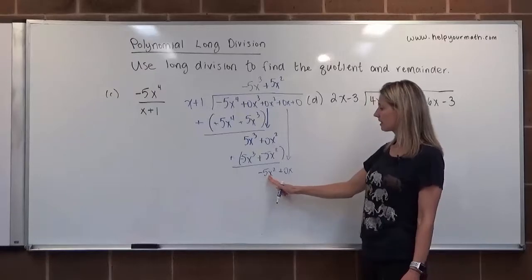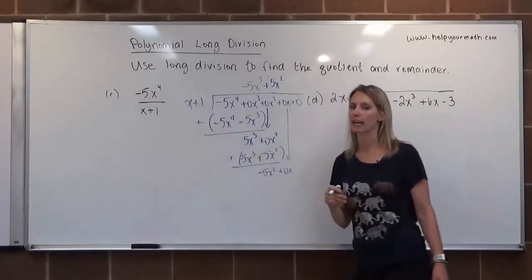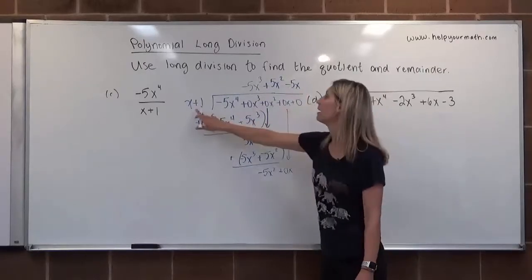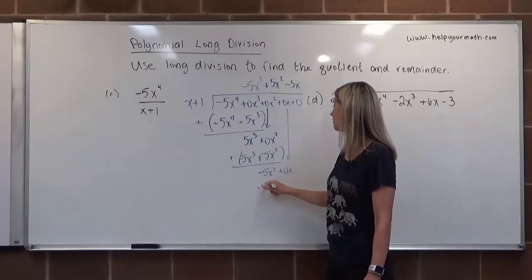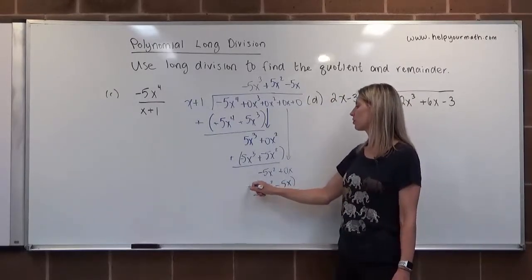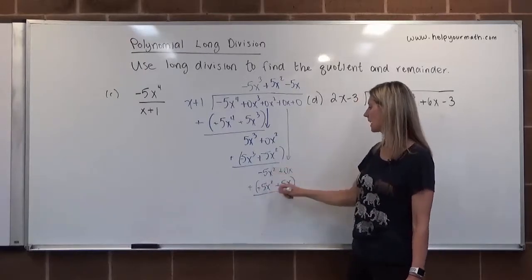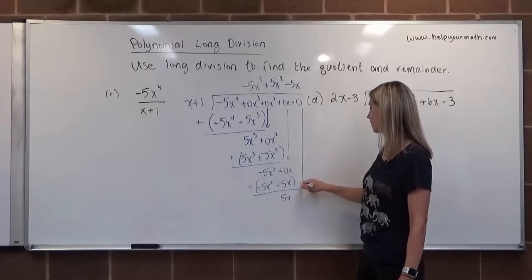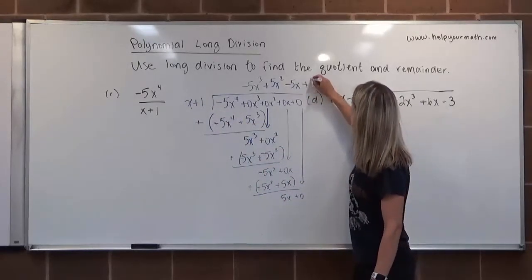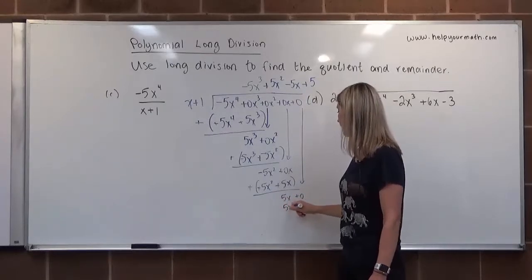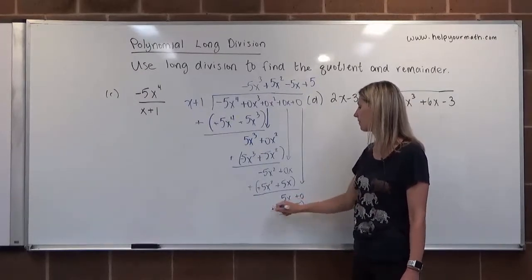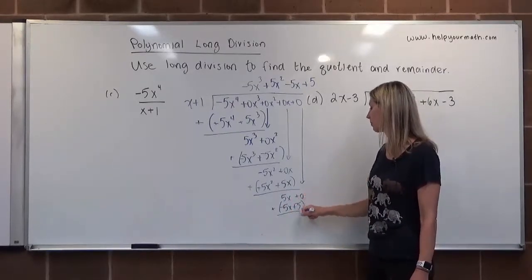We take -5x² divided by x to get -5x, so minus 5x. We multiply -5x by the divisor to get -5x²-5x, then subtract by changing signs: -5x² and +5x² cancel. Then 0x+5x gives 5x. We bring down our constant 0. We divide 5x by x to get 5, so plus 5. We multiply 5 by x+1 to get 5x+5, subtract — 5x-5x is 0, and 0+(-5) gives -5.